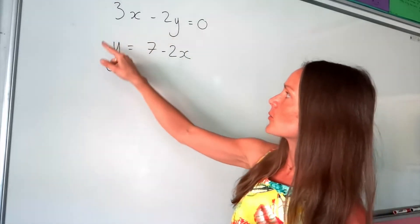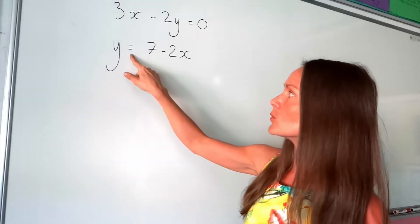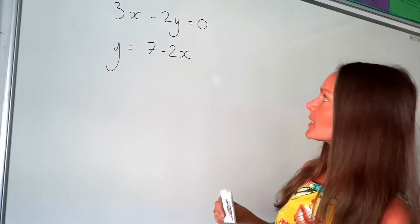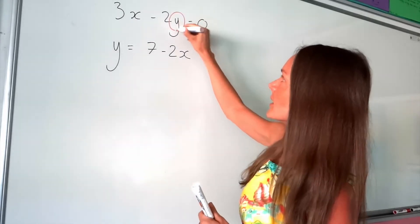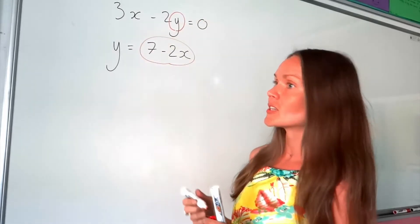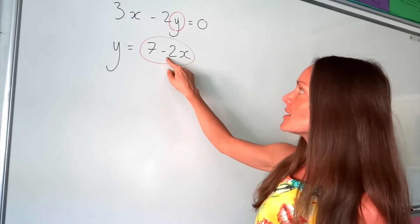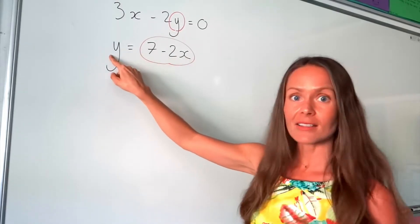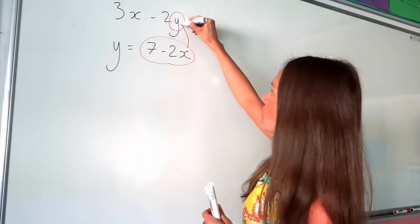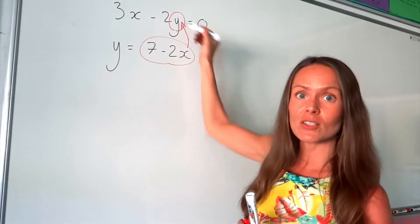As you can see, this second equation here is written as y equals, which is perfect. It means that we can change the value of y in the top equation to this expression, 7 minus 2x, because this is exactly the same as the value of y. So we're just going to substitute that in there instead of writing the letter y.